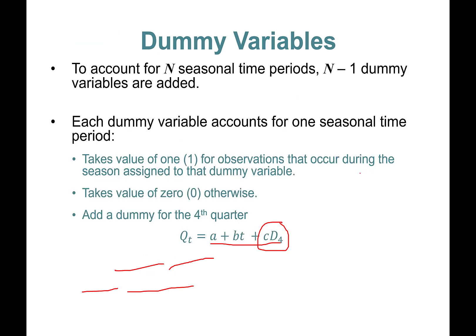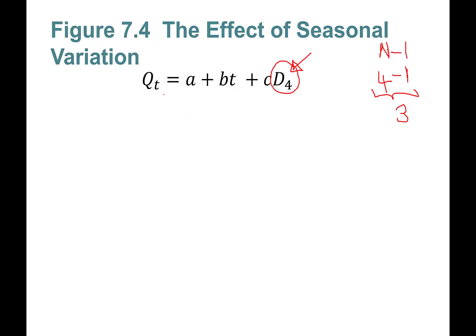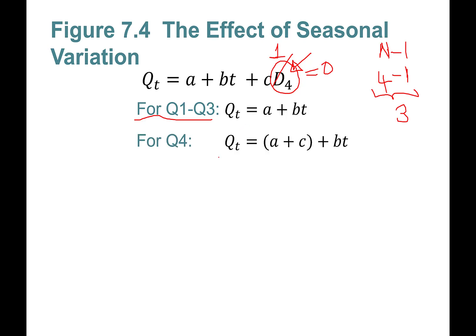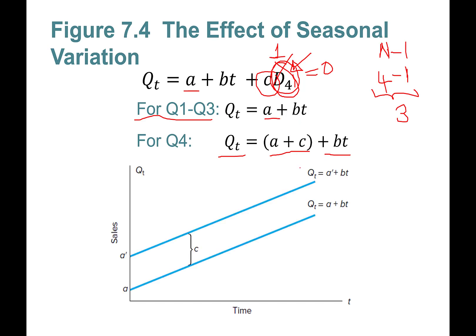Let's see what this does. For quarters one through three, D4 equals zero, so the equation is simply Q_t = a + bt. For quarter four, D4 equals one, so the equation becomes Q_t = (a + c) + bt — meaning c shifts the intercept upward. This is how dummy variables alter your intercept rather than the slope.